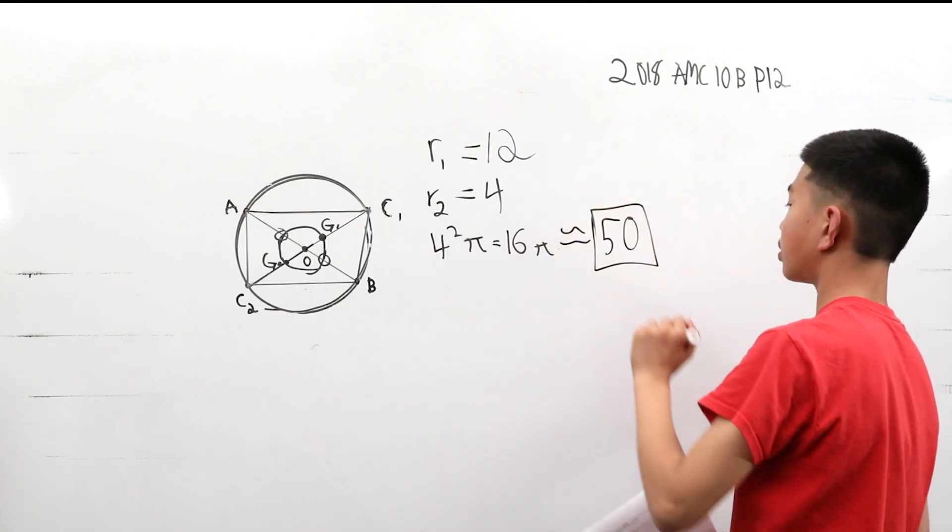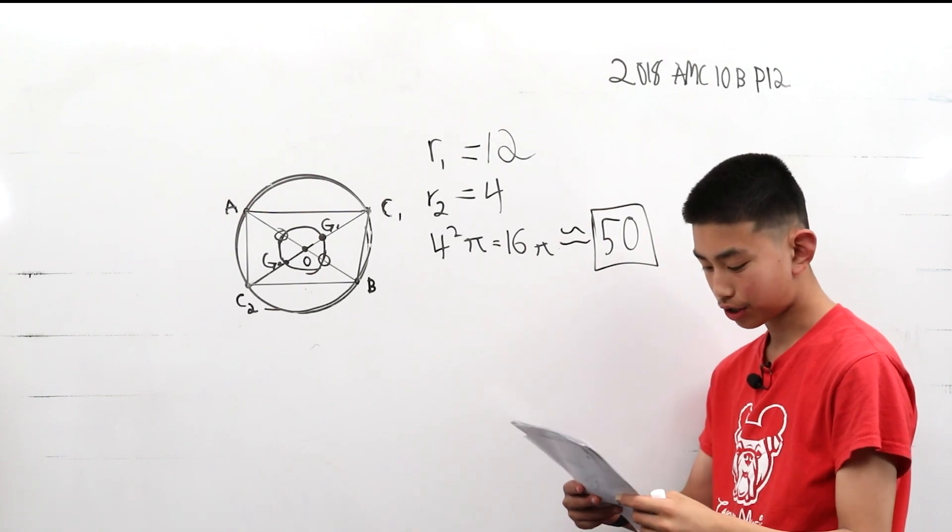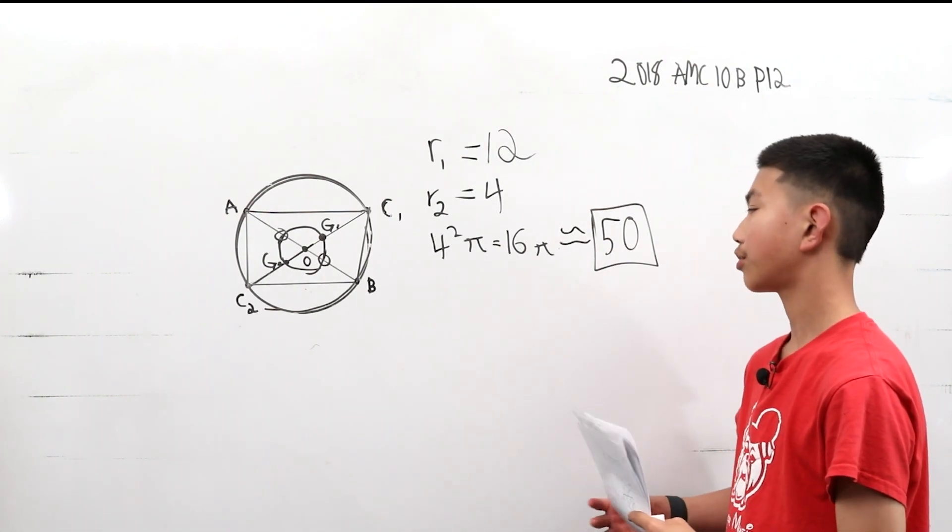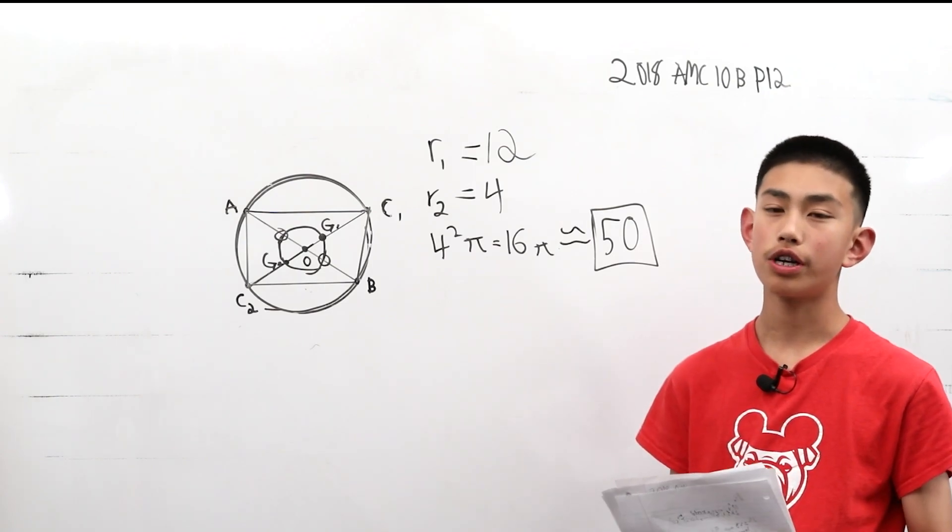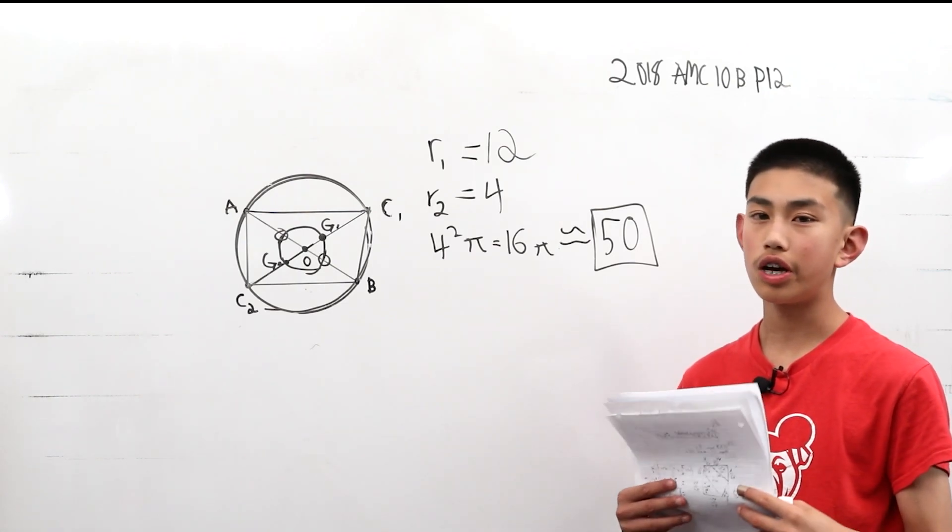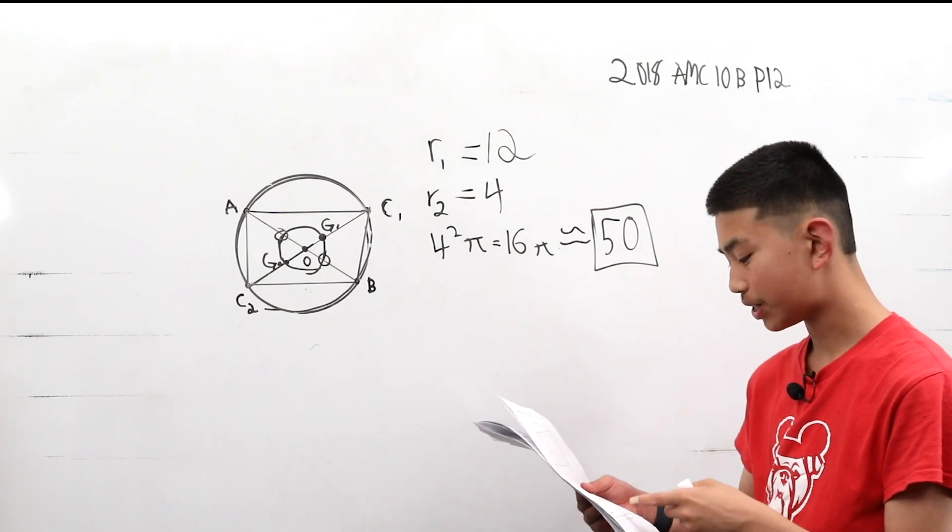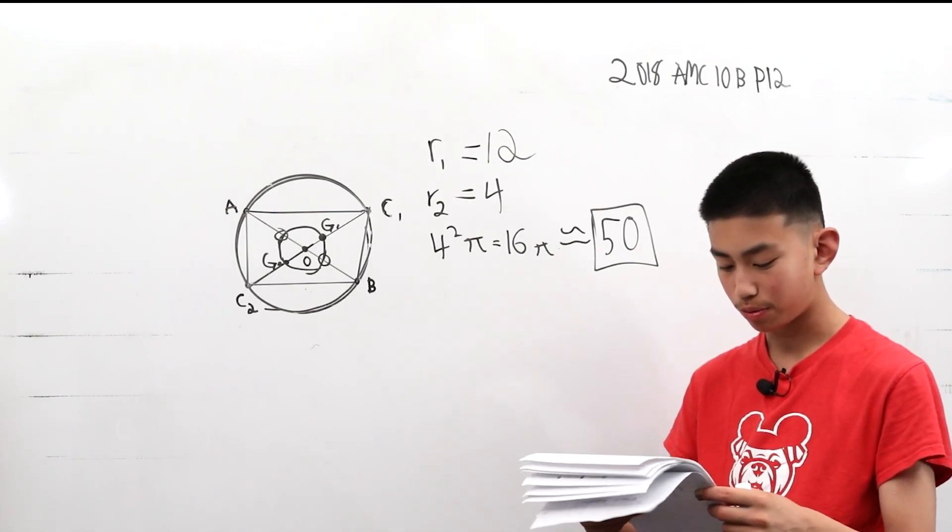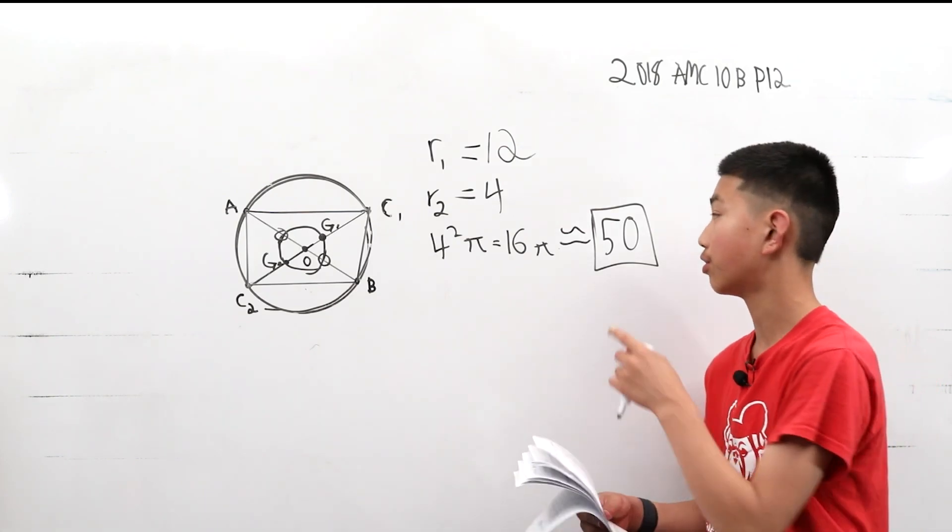We know it's about 50 because in the answer choices they're relatively far apart, and our answer is 16 times like 3 point something. So it's got to be near 50, and we see that the closest answer choices between it are 38 and 63. So this is our answer.